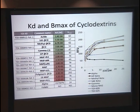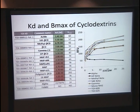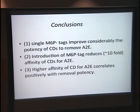In conclusions so far: a single mono-6-phosphate tag considerably improves the potency of cyclodextrins to remove A2E. Introduction of a mono-6-phosphate tag reduces tenfold the affinity of cyclodextrins for A2E, yet they are still much more efficient at removal. And in some cases, higher affinity of the cyclodextrin for A2E correlates positively with removal potency, even in the absence of a mono-6-phosphate tag.